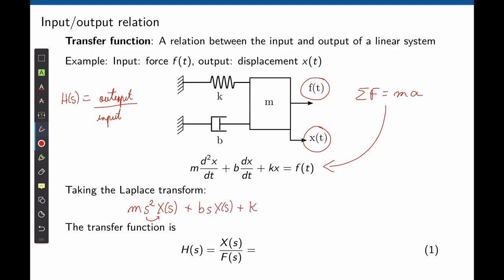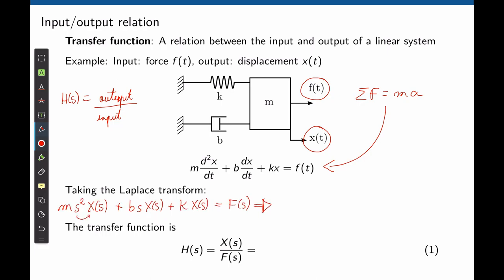k remains k, and x(t) becomes X(s). f(t) becomes F(s). We can now factor X(s) on the left side. Applying the definition of a transfer function — output divided by input — where the output is displacement X(s) and the input is force F(s), the transfer function is 1/(ms² + bs + k). This is the transfer function between input and output.